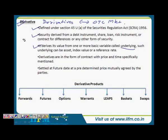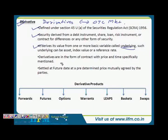Defining a derivative: a derivative is something which, in simple language, derives its value from the underlying. It does not have its own value. You go to a market to purchase something, it has a value attached to it. But a derivative is something which has a value but it derives its value from the other thing. That is the basic definition of a derivative — it derives its value from an underlying.